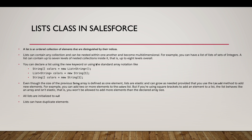There is a limit of seven levels of nested collections, eight overall. We have multiple ways to declare a list: using the new keyword or standard array notation, for example: List<String> colors = new String[1]. Even if the size is defined as one, lists are elastic and grow as needed when using the list.add() method. However, if we use square bracket notation, the list behaves like an array and isn't elastic.